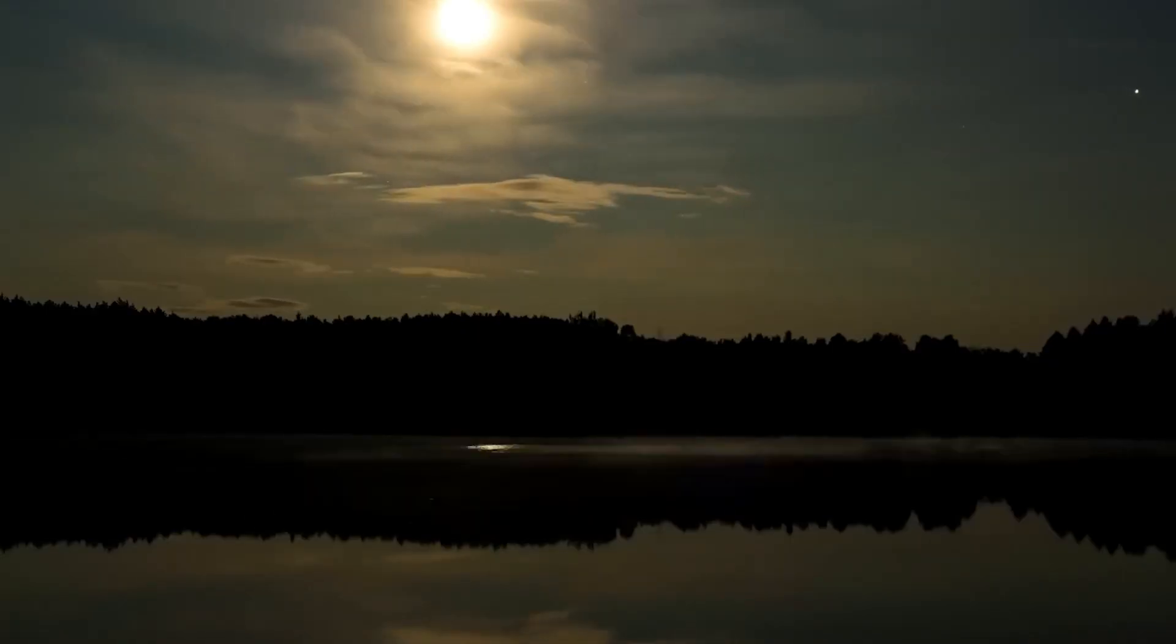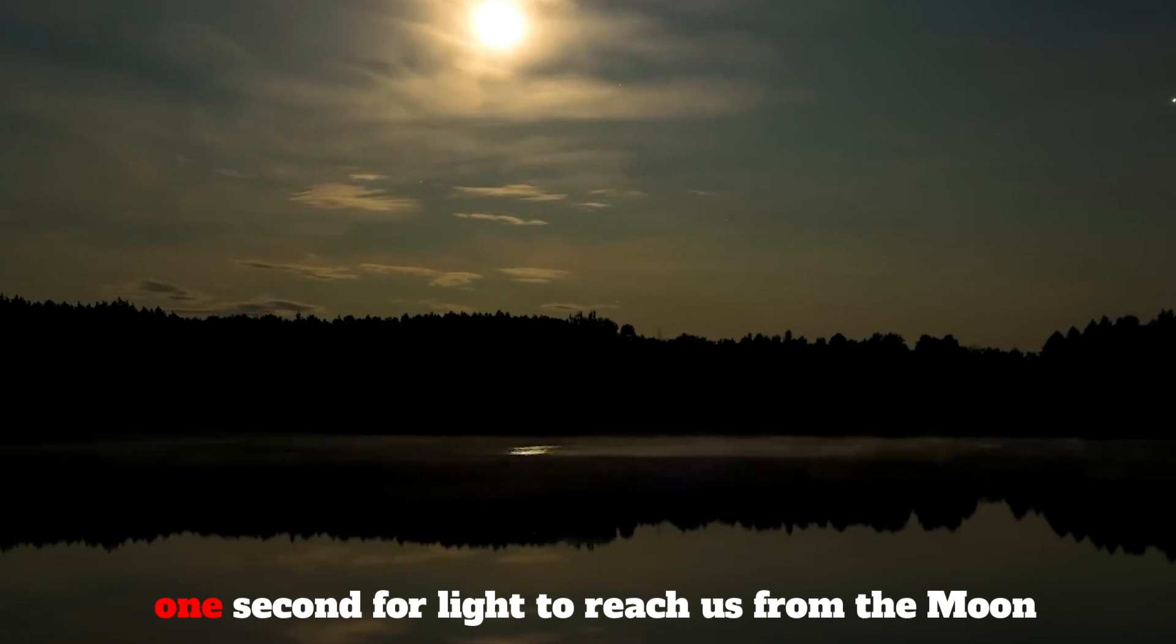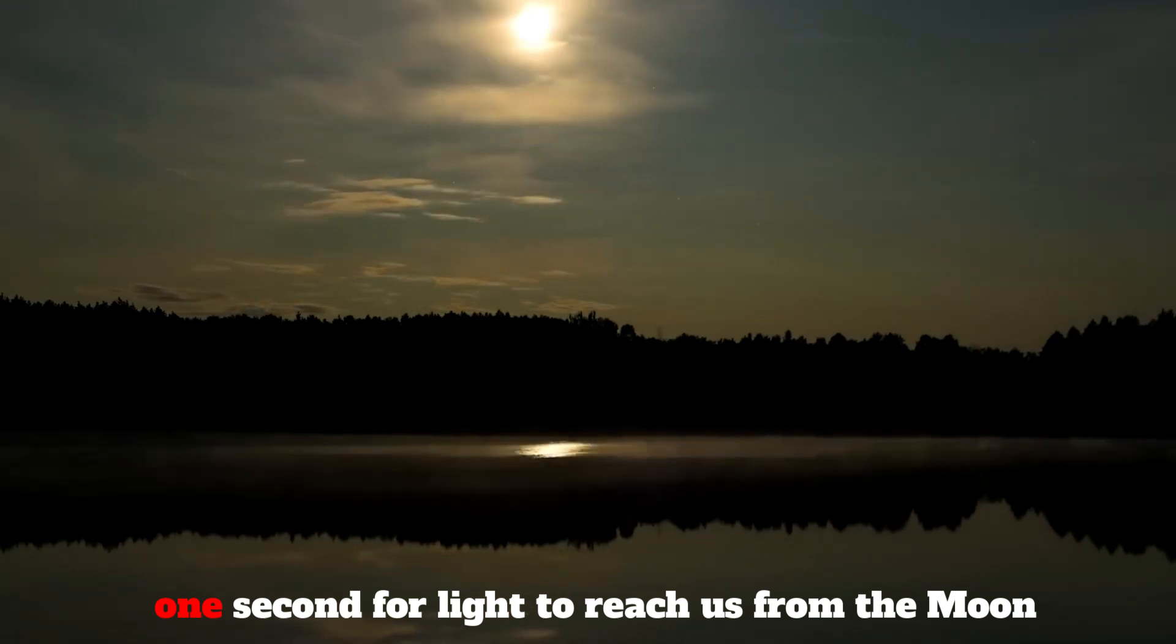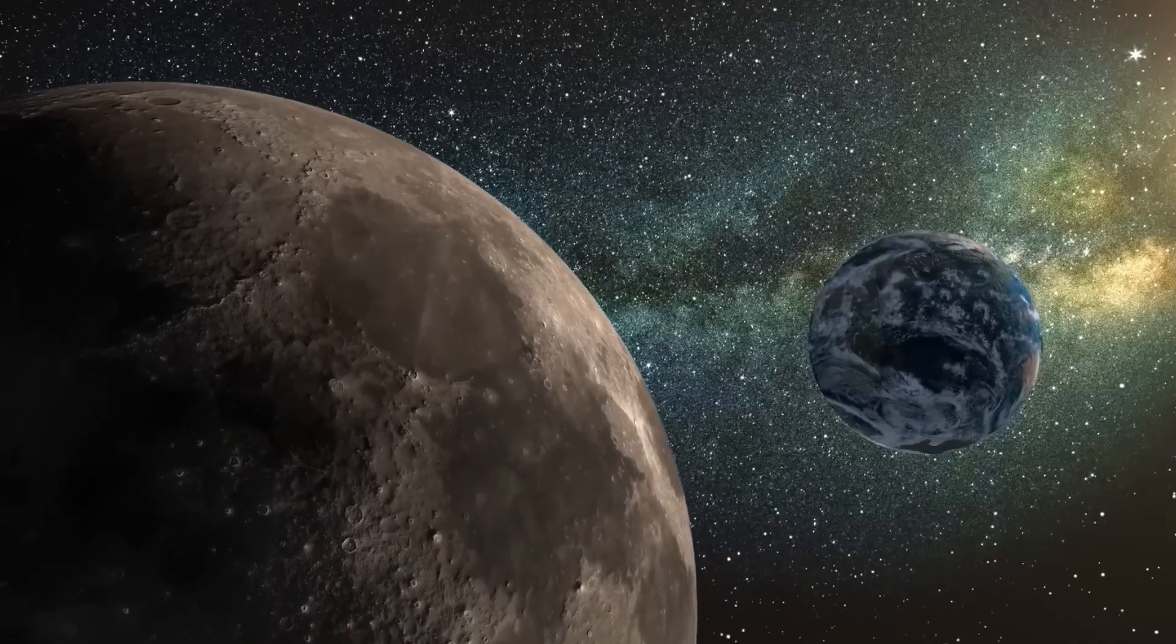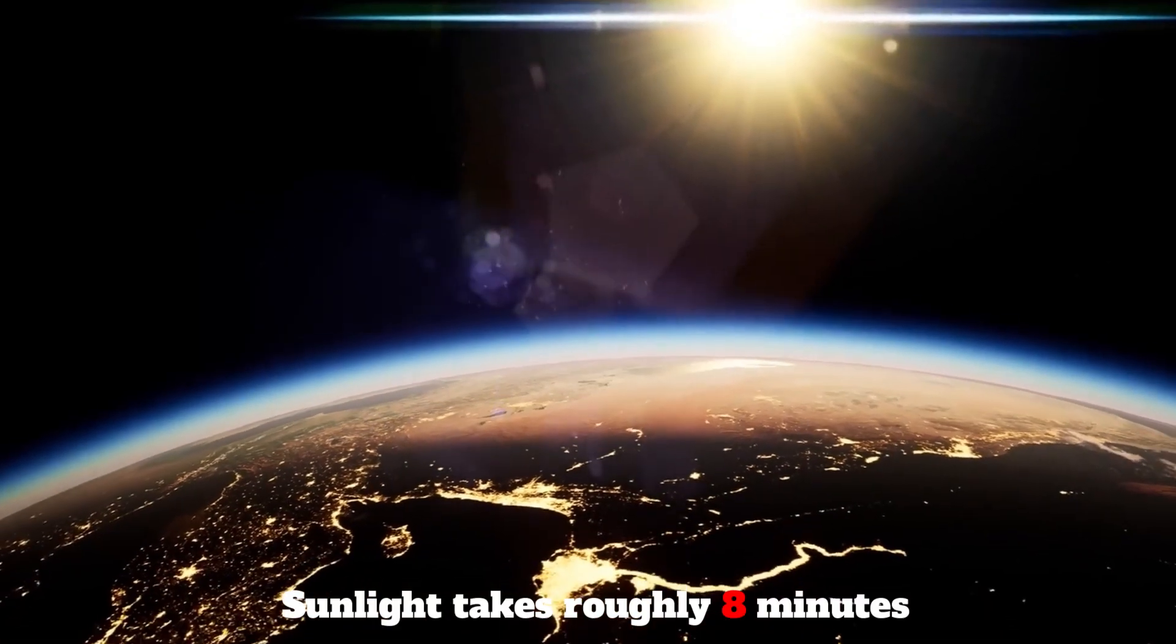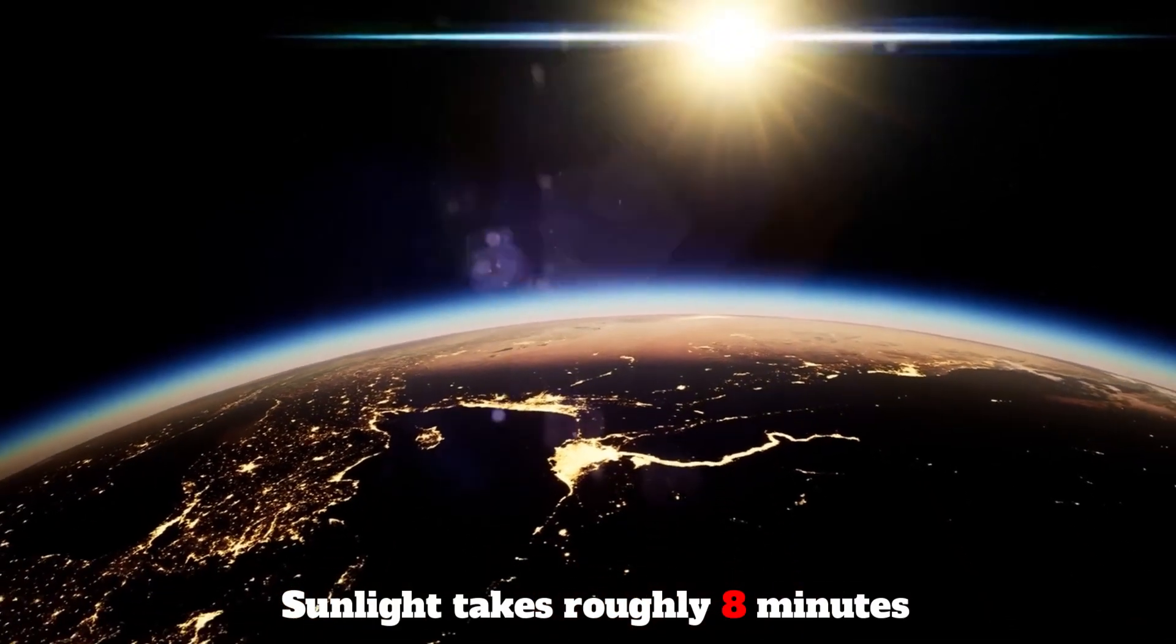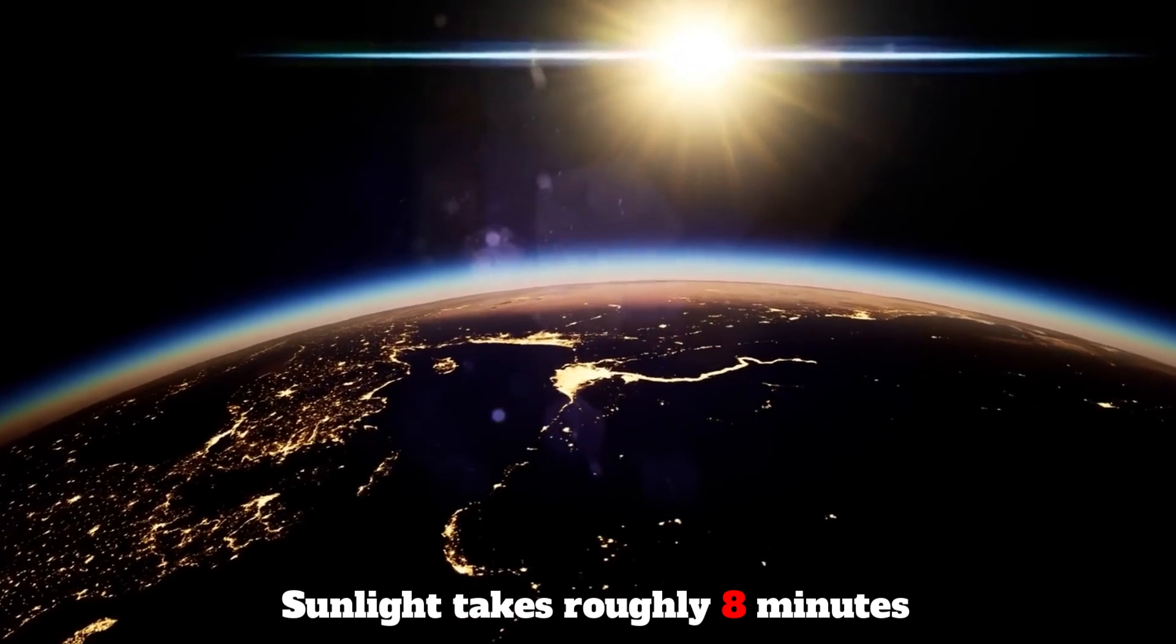For example, it takes about one second for light to reach you from the moon, meaning the moon is one light second away from us. However, sunlight takes more time, roughly 8 minutes, and its distance becomes 8 light minutes.